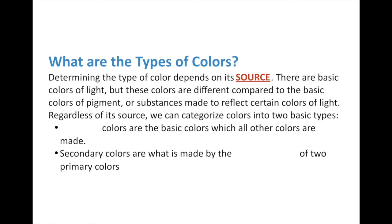Regardless of their source, we have two main categories of color to look at in this lesson. The first category is what we call primary colors - they are the three basic colors from which all other colors are made. Light has three primary colors, and pigment has three primary colors. When you mix two primary colors of light you get secondary colors, which are a combination of two primary colors. And of course you have tertiary and beyond, giving us an almost infinite number of colors.